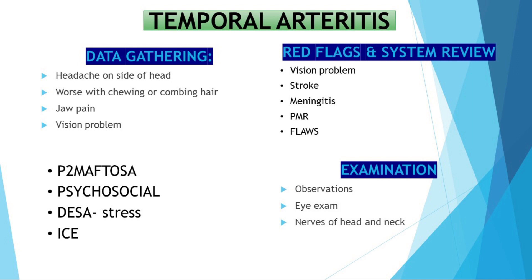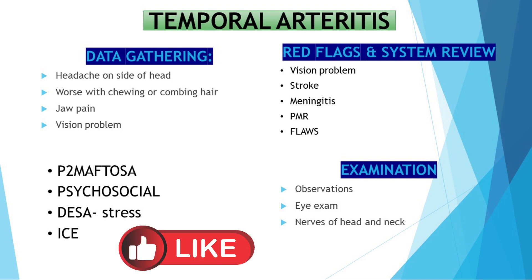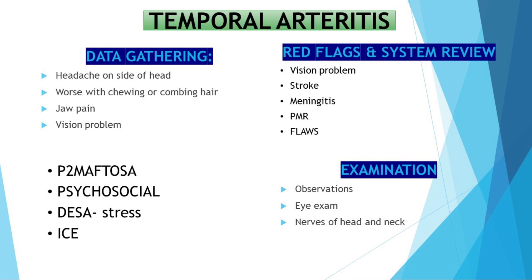Now that we are done with SOCRATES, we look for any other symptoms as well. Temporal arteritis is related to polymyalgia rheumatica. So you can ask about any pain in your shoulders, any joint pain or muscle aches. That's important to ask.